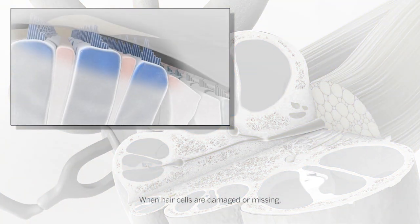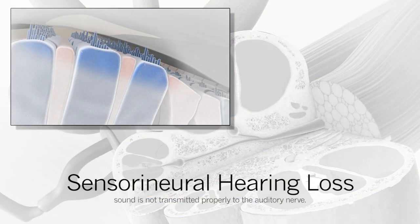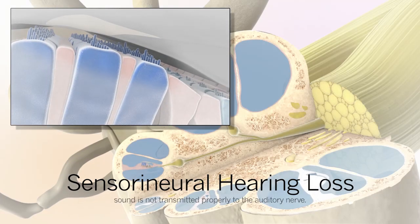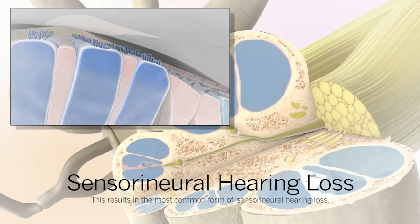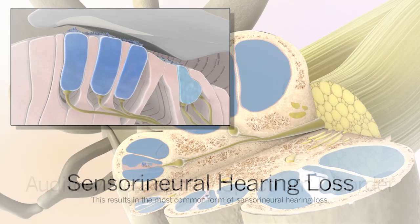When hair cells are damaged or missing, sound is not transmitted properly to the auditory nerve. This results in the most common form of sensorineural hearing loss.